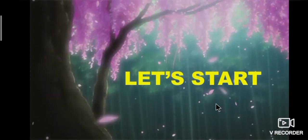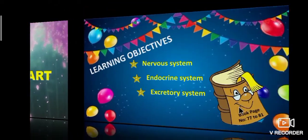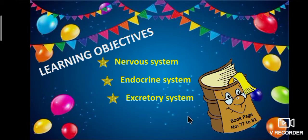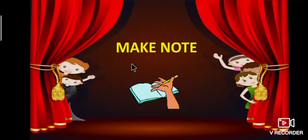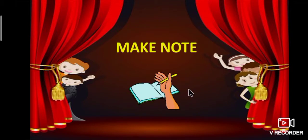Okay students, let's start today's session. Today we are going to learn about nervous system, endocrine system and excretory system. These topics are covered in book pages 77 to 81. Students, make a note of important points. If you have any doubt, note the question in your notebook and it will be clarified on the day of reopening.